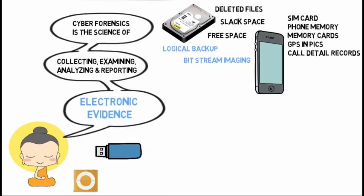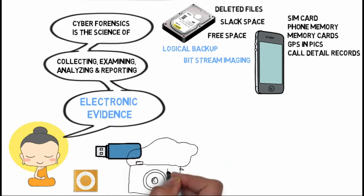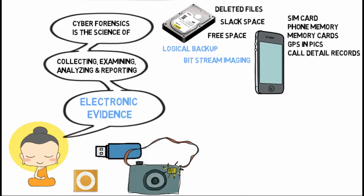USB drives are also a big source of electronic information, as are digital cameras. In one case, a lady gave us a digital camera and asked us to recover deleted photographs. When we recovered them, they showed evidence that her husband had been on a secret vacation with another woman and had taken many photographs, then deleted them from the camera memory — not realizing they could be so easily recovered. This information was presented to the court during her divorce proceedings.